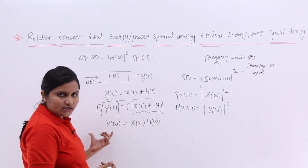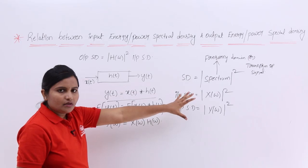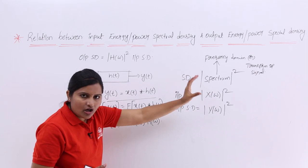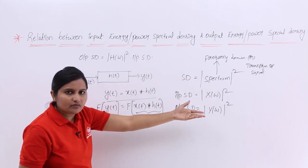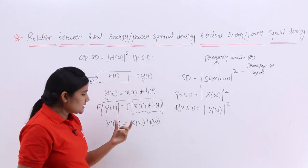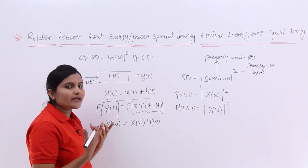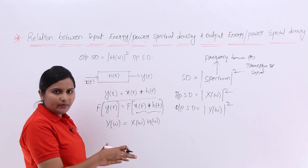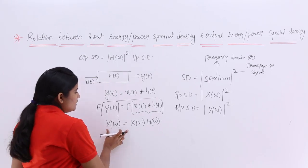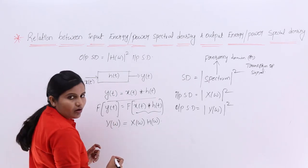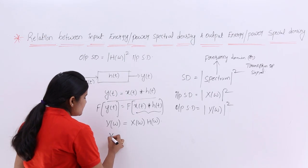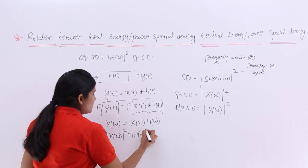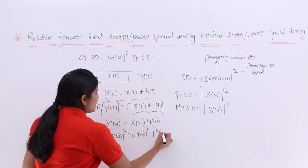Now, to relate the spectral densities, we need the square of the spectrum, not just the spectrum itself. So squaring both sides, Y of omega whole square is equal to H of omega whole square into X of omega whole square.